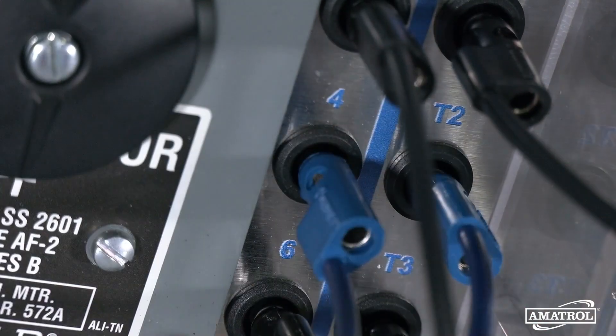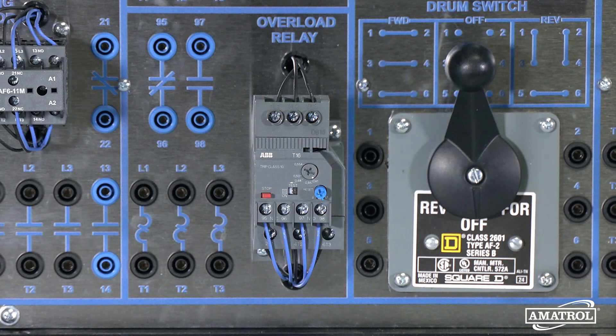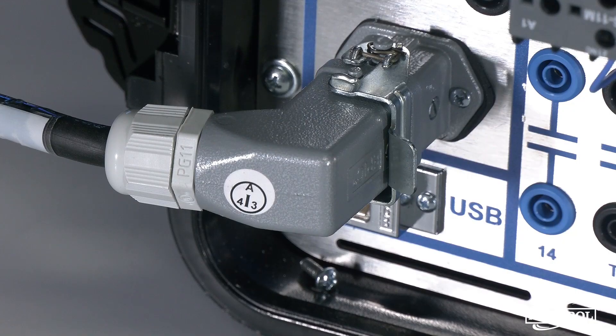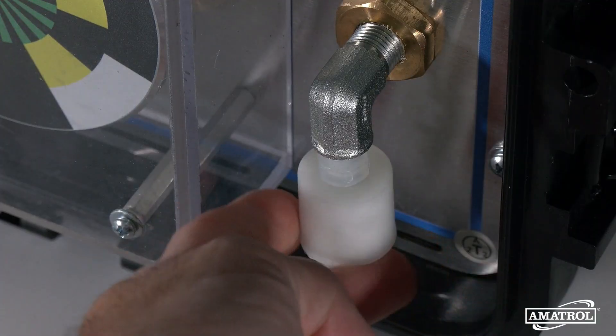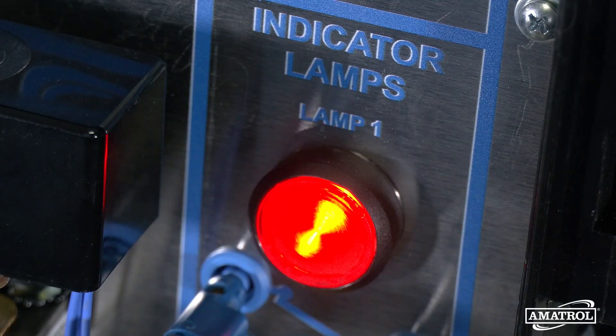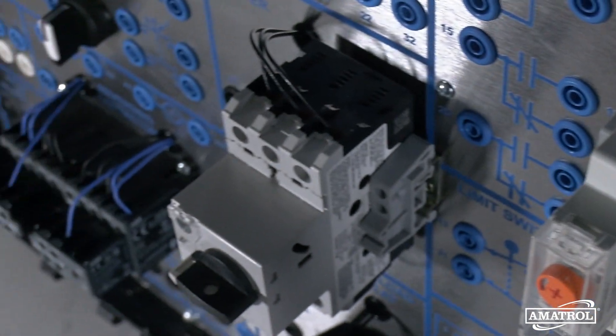Portable electric motor control features real-world motor control components, such as a three-phase AC squirrel cage motor that uses three-phase AC power. Other industry standard components include lockout tagout, a drum switch, a pressure switch, and a float switch. Users will gain key hands-on skills with the actual equipment they'll encounter on the job.